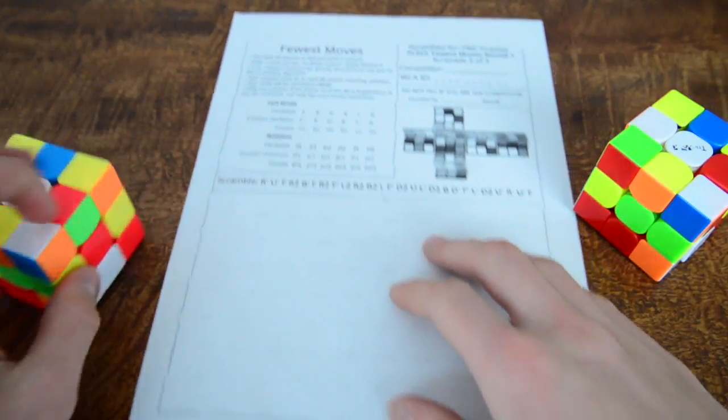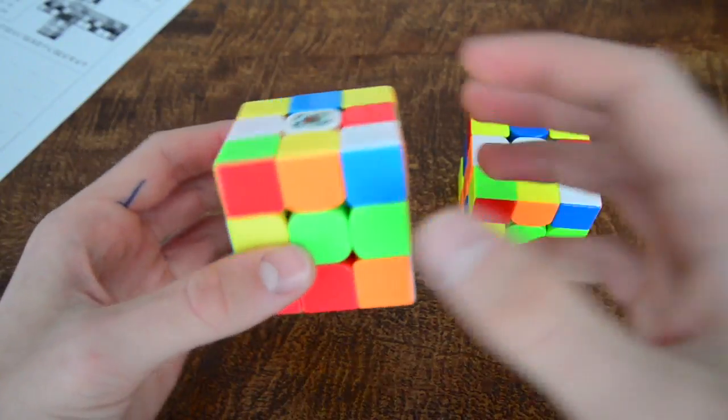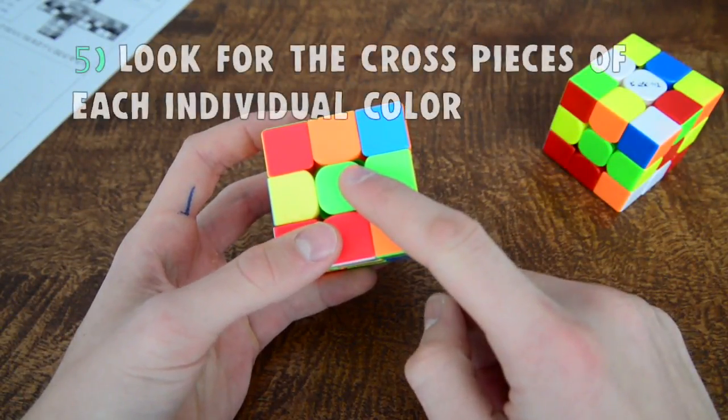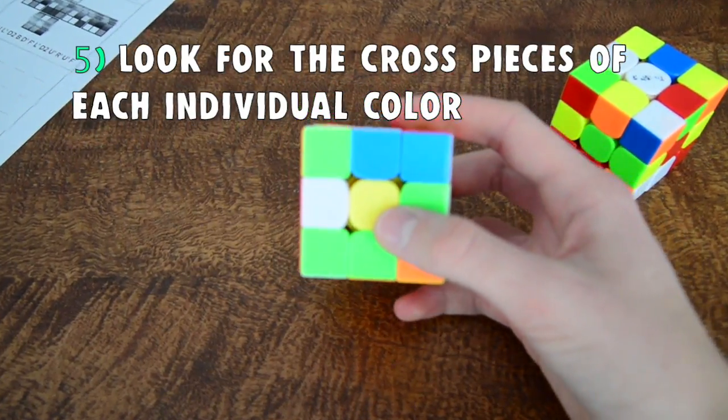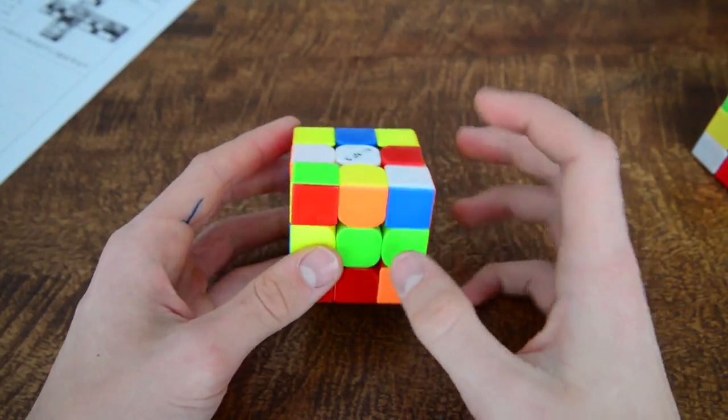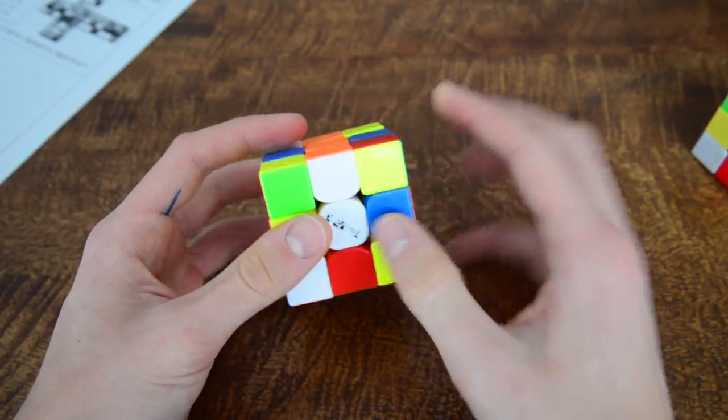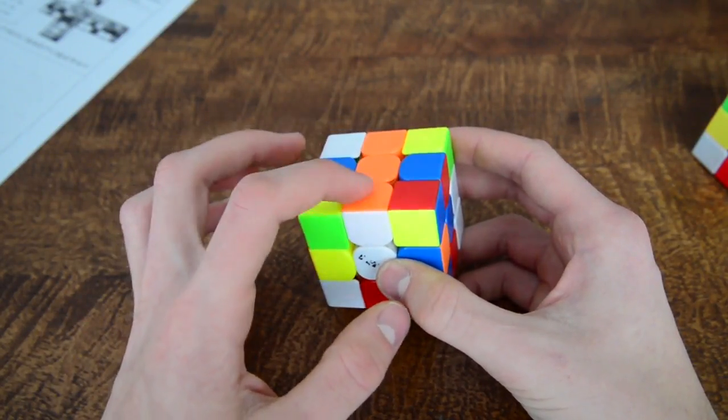Okay, so you have your cube scrambled. First thing you do, the first tip you need to do is look at each individual center or color and try to find the most efficient way of the cross. So I already see that in the white side we already have one cross piece.